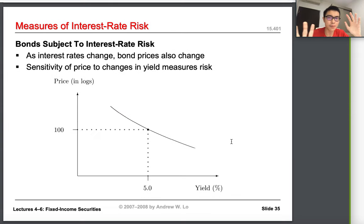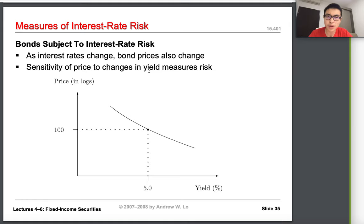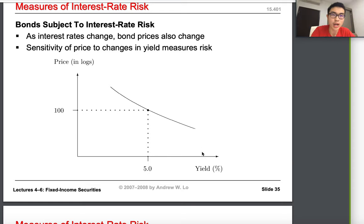Now we move on to measures of interest rate risk. As the interest rate changes, bond prices also change. I'm introducing the sensitivity of prices to yield changes. When there's a higher interest rate, prices usually go down. A higher yield means a more risky asset — the issuer has to pay more to compensate for the risk — which also means a lower price.